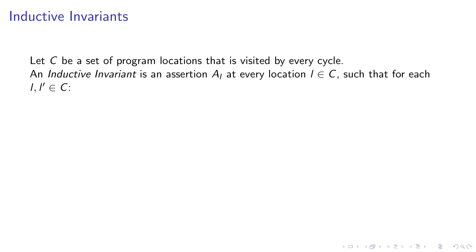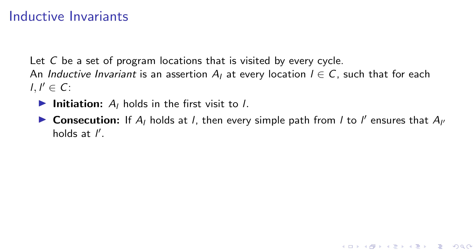Here's a formal definition. Let C be a set of program locations that is visited by every execution cycle of the program — in other words, C is a cut set. We basically assign some assertion AL to every location L in C. These assertions form an inductive invariant if they satisfy two conditions. The first condition is initiation, similar to the base case in induction: when we visit one of the locations in C for the first time, the assertion at that location should hold. Then we have consecution, which says that if I start from one of these locations, do a simple execution path, and reach another location, if initially the invariant held, then afterwards the invariant should hold again.